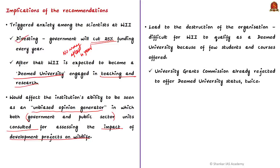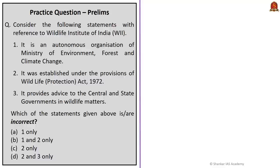It would also lead to the destruction of the prestigious organization, since it is difficult for WII to qualify as a deemed university — there are only few students and few courses offered. UGC has already rejected giving deemed university status to WII. So funding will be choked and the ability of the organization to work will be disturbed. If you encounter a main question about how independent bodies are losing their significance, you can cite this example, along with the CSO and NSSO merger into NSO as another case of an independent body being brought under government control.